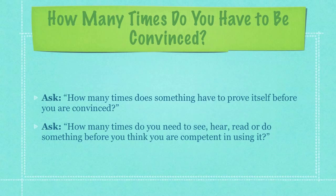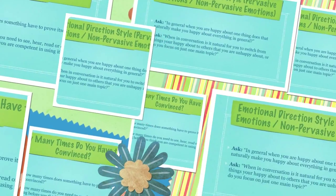15% of people are almost never convinced of almost anything. These are the people that go through life mistrusting most people. The only way to try to convince these people is to tell them straight up that you're aware they are very hard to convince and that no time will probably feel like the right time to try something different — so why don't they just give it a try today?